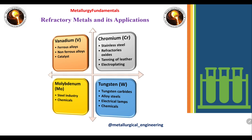The next category is refractory metals and their applications. Vanadium is used in ferrous alloys, non-ferrous alloys, and as a catalyst. Chromium, a common refractory metal, is used in stainless steel, refractories, oxides, tanning of leather, and electroplating. Molybdenum is used in the steel industry and chemicals. Tungsten or tungsten carbides are used in alloy steels, electrical lamps, and chemicals.